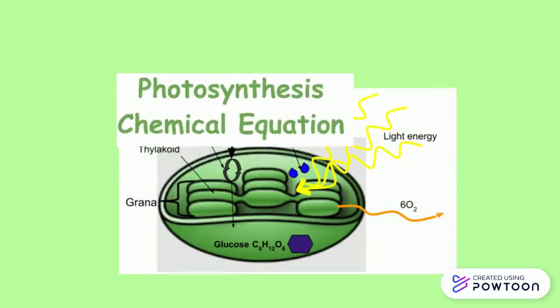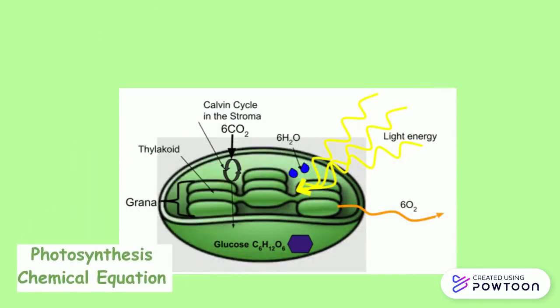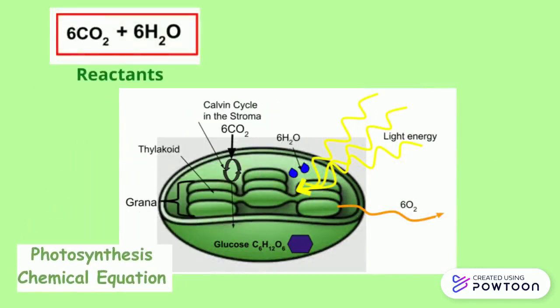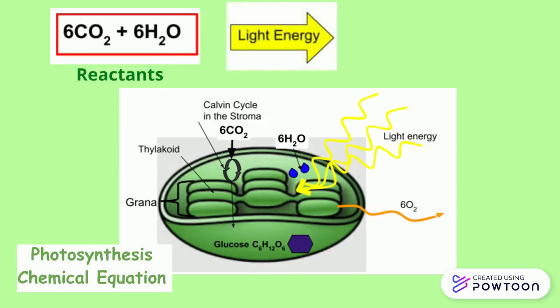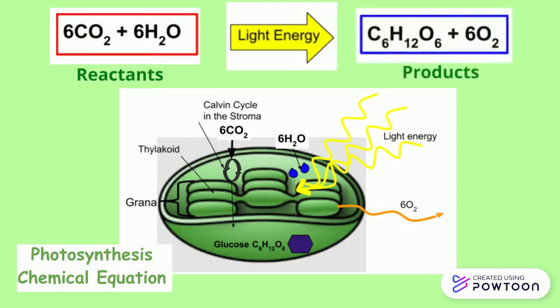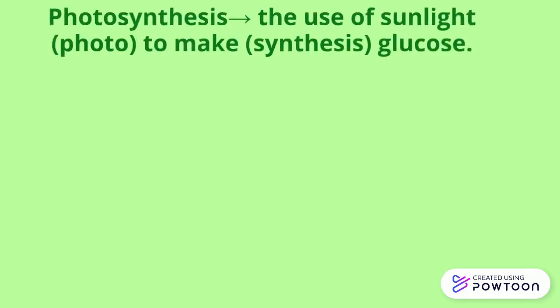Photosynthesis as a chemical equation: the reactants that react together are 6CO2 and 6H2O — carbon dioxide and water — mixed with the energy of light to produce C6H12O6 glucose and oxygen. The meaning of the term photosynthesis is simply the use of sunlight, photo, to make, synthesis, glucose.